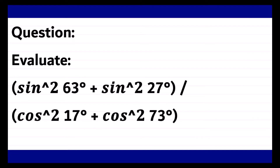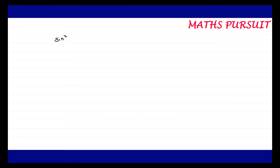The given question is: evaluate sin²63° + sin²27° upon cos²17° + cos²73°.